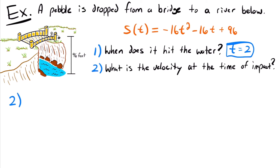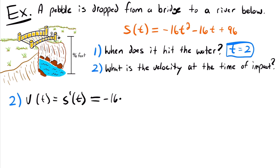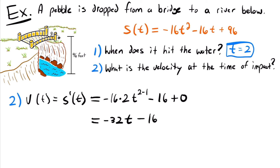For the second part: we want the velocity at the time of impact, which is t equals 2. We take the derivative of our position function to find the velocity function. Using the power rule: the derivative of negative 16t squared is negative 32t, the derivative of negative 16t is negative 16, and the derivative of the constant 96 is 0. So our velocity function is negative 32t minus 16.